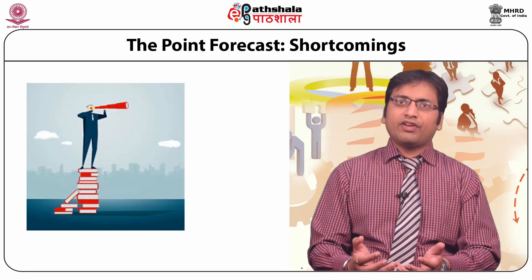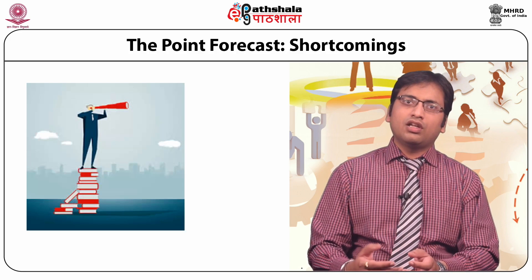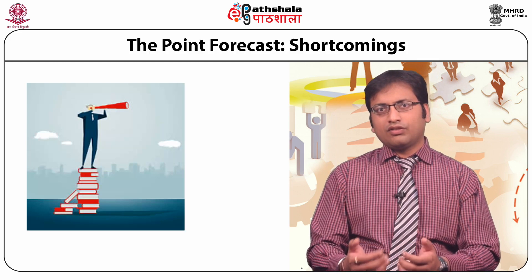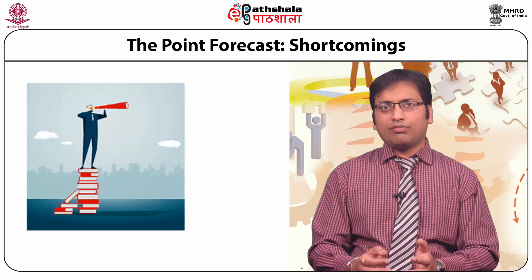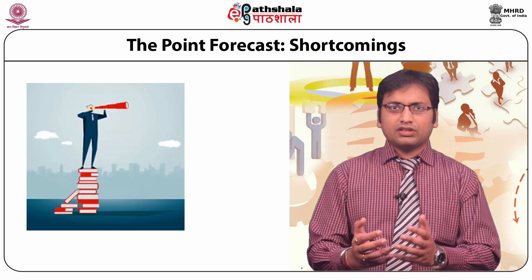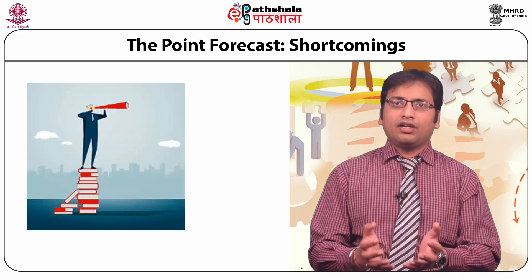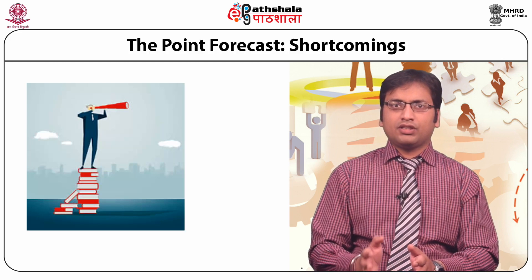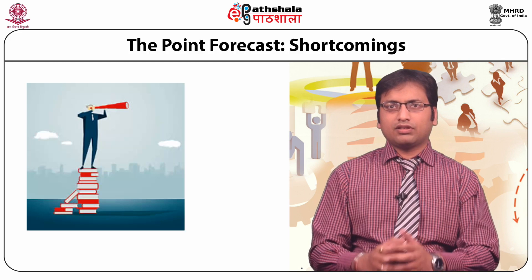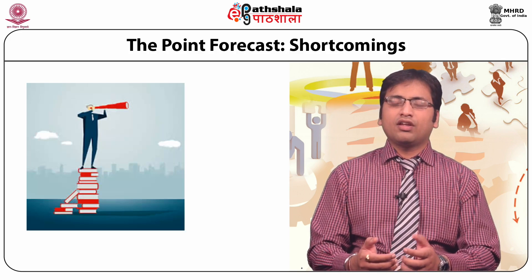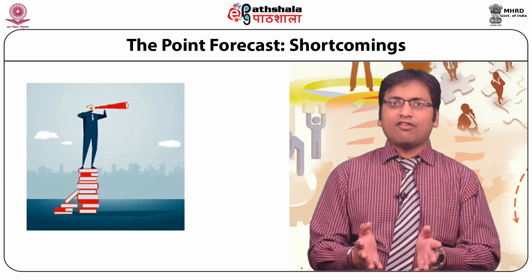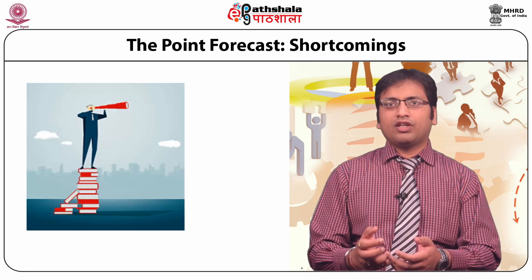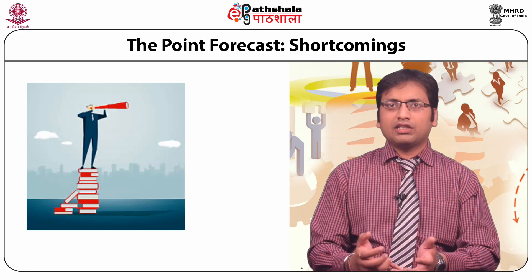This approach ignores the fact that an event which is being forecasted is not a predetermined entity. The circumstances under which an event has occurred in the past might change in the near future. For instance, sales of a particular style and color would change with changes in the economy, fashion trends, consumer taste, etc. Thus, instead of having precise outcomes, it is better to have a probability distribution for a series of events. Each probability value for each event would indicate the likelihood of occurrence of an outcome.